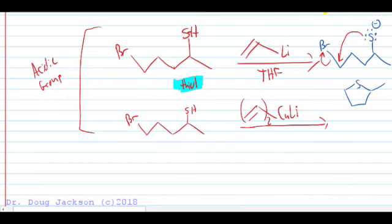But if we do this with a Gilman reagent, we are stable to the acidic functional group. And we end up coupling on our vinyl group to the one, two, three, four, five carbons. Leaving the acidic functional group in place.